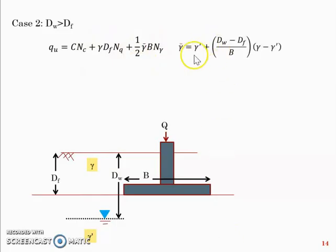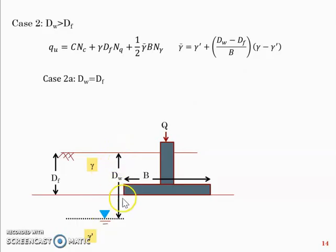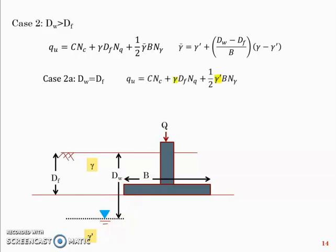In the third term we have gamma_bar, which is: gamma_dash + (dw − df)/B × (gamma − gamma_dash). Case 2a is when dw equals df — water table at foundation level — giving: c·Nc + gamma·df·Nq + half·gamma_dash·B·N_gamma. This is the same as Case 1b from the previous slide: the second term uses gamma and the third term uses gamma_dash.